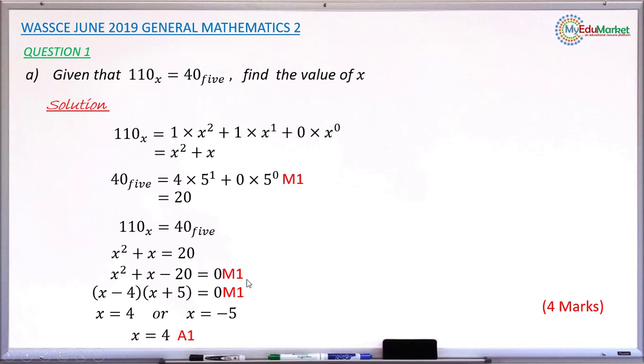The next mark is for getting the correct quadratic equation, that is x squared plus x minus 20 equals 0. You have this method 1 mark.